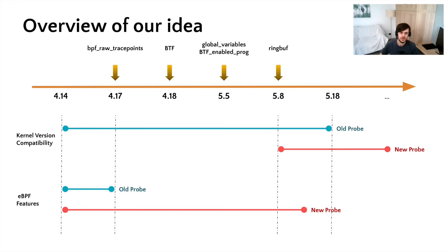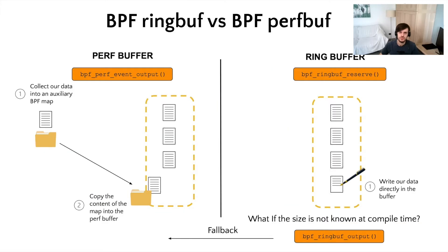Let's dive into the new BPF features. To trace the whole system, we have to send a lot of information to user space, but what is the best way to push a high throughput of data with BPF? Today there are two main approaches: the BPF Perf Buffer and the BPF Ring Buffer. Let's start talking about the Perf Buffer. In this case, we have just one API to send data — the BPF perf event output. The main disadvantage of this helper is that we cannot push data directly into the buffer; we first need to store them into an auxiliary BPF map. Moreover, when we try to copy the content of the map into the buffer, we have to discard all the data if the buffer is full, wasting a lot of precious clock cycles.